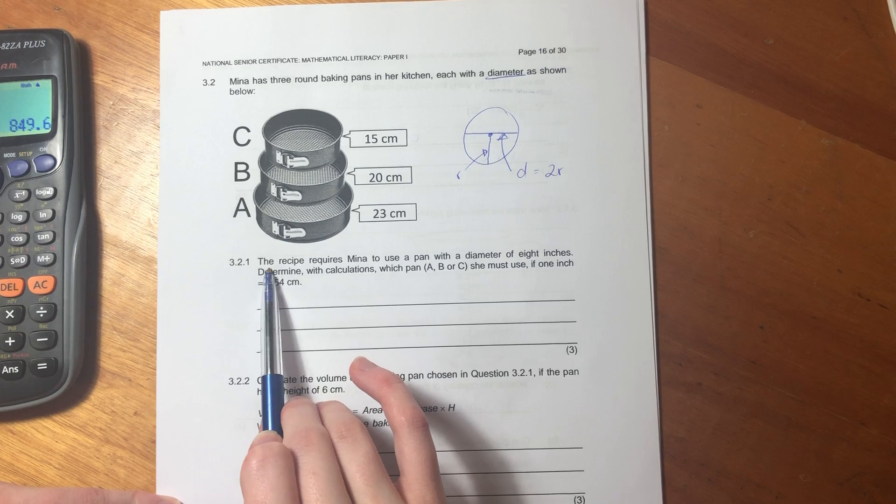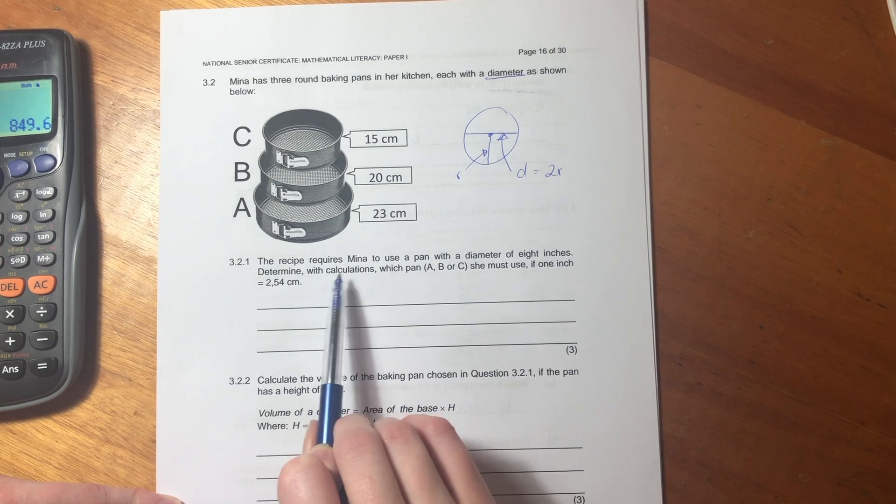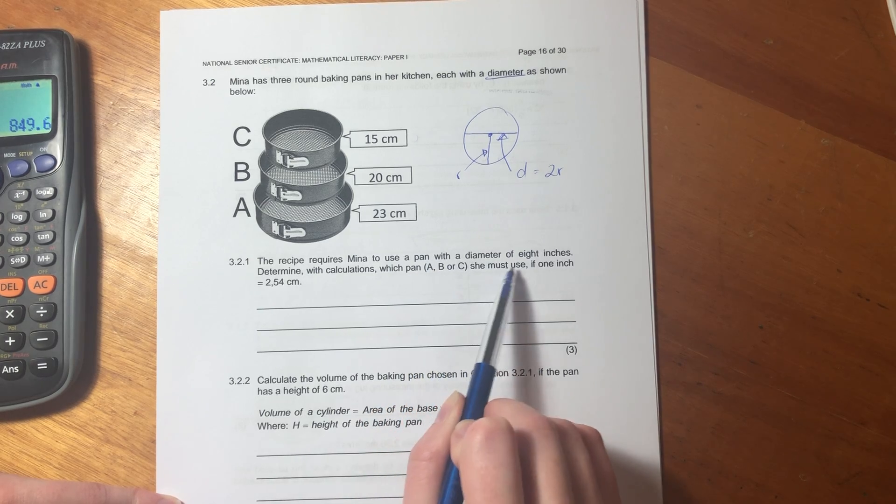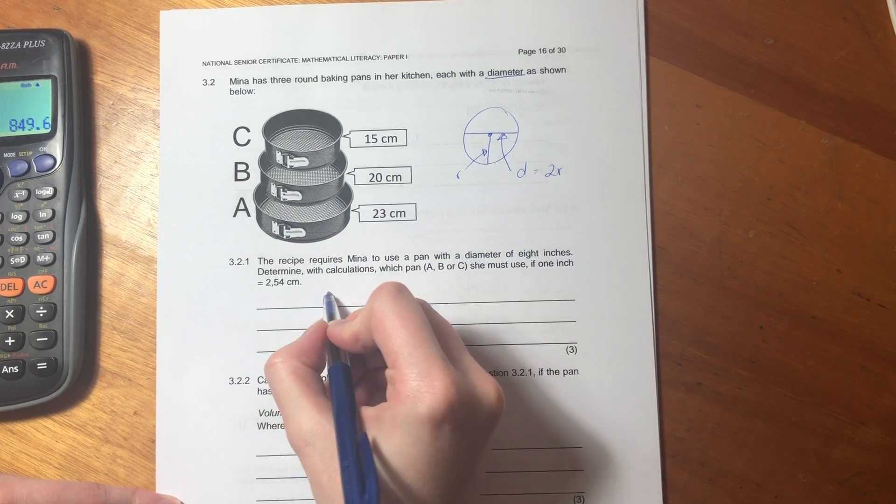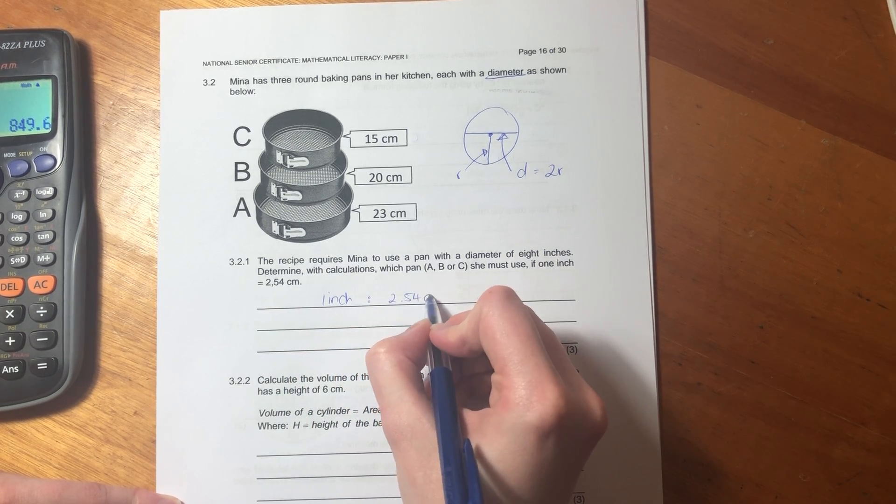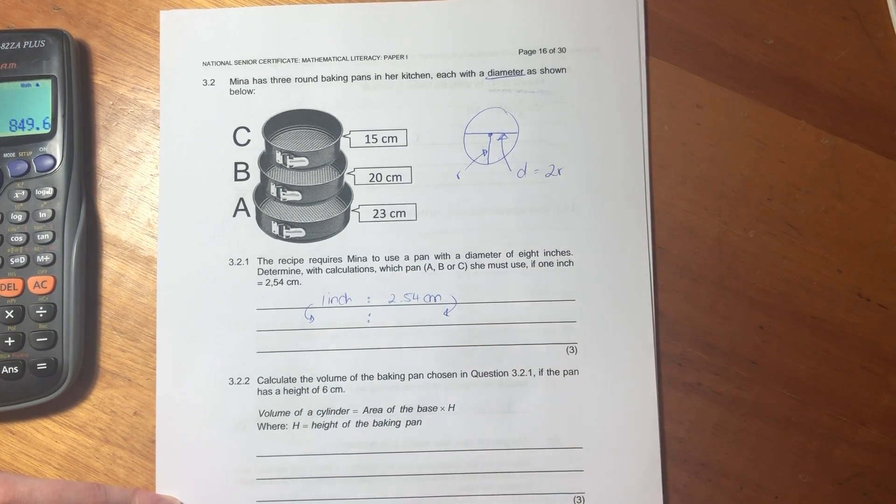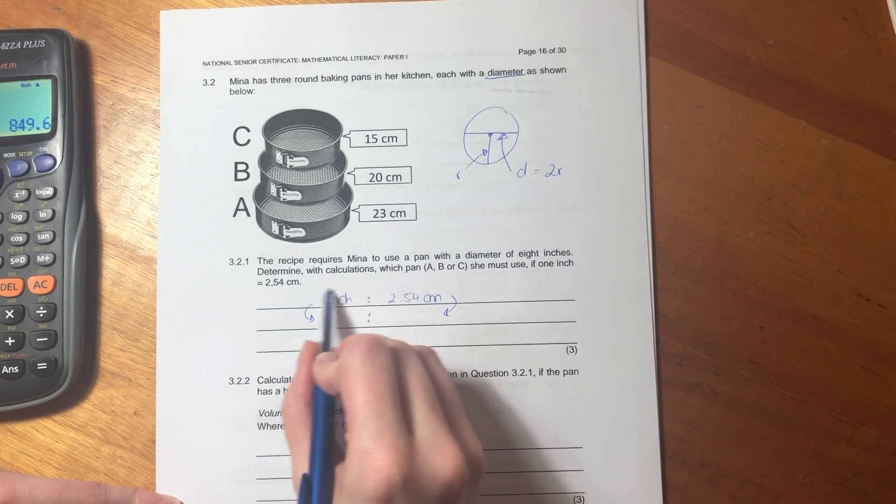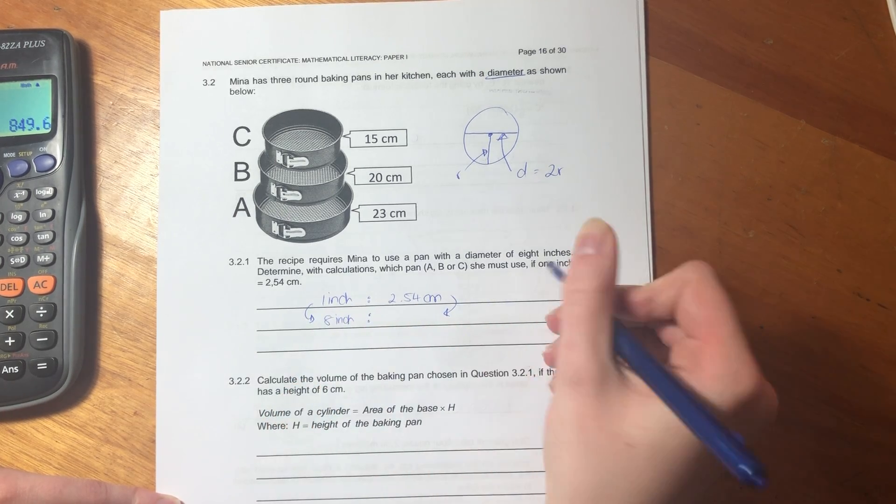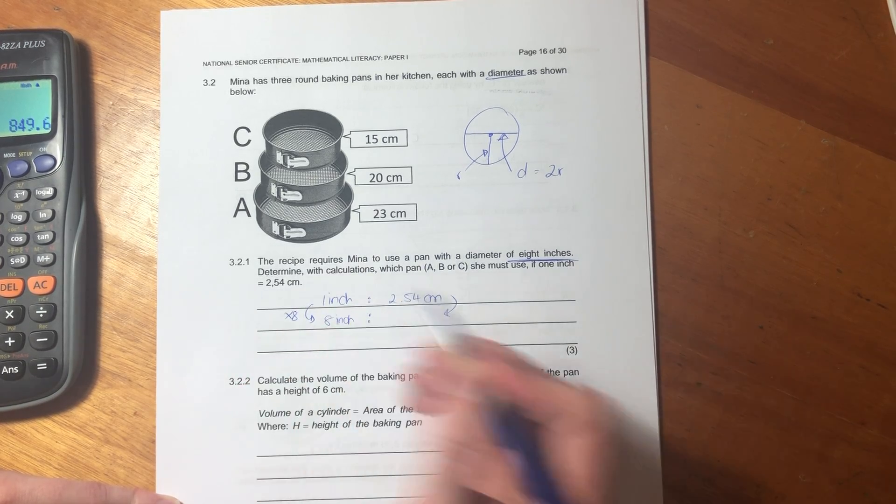Then it says the recipe requires Mina to use a pan with a diameter of eight inches. Determine with calculations which pan, A, B, or C, she must use if one inch equals - so we can just write the ratio, guys, this is all about ratios. Ratios are so important in the syllabus. So now you're like, why are you putting in arrows? But I'll tell you, don't worry. So we're going, the ratio is one inch to 2.54 centimeters.